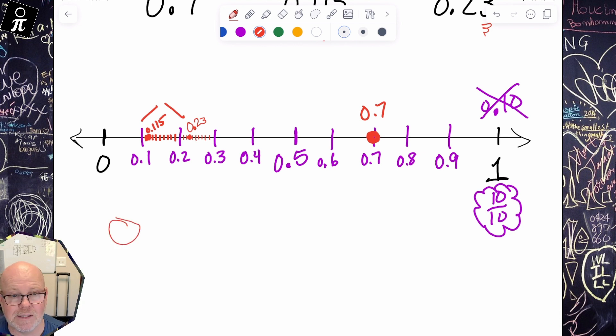We see that 0.115 is the least, 0.23 is next, and the greatest of the numbers is 0.7 or seven tenths. So there we go.